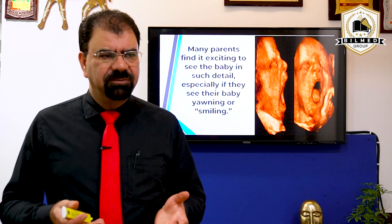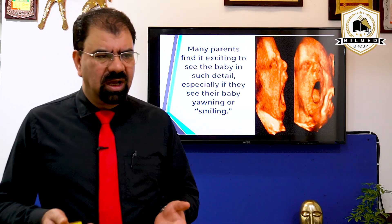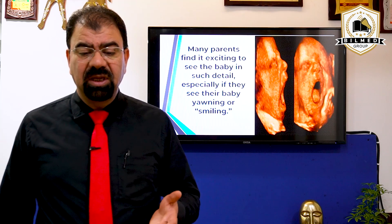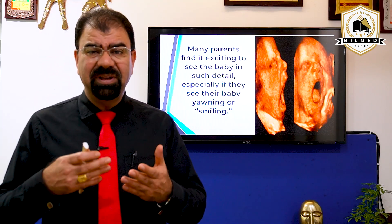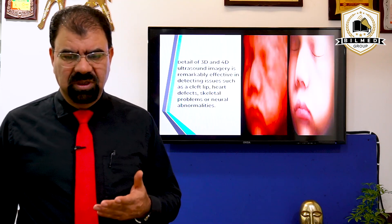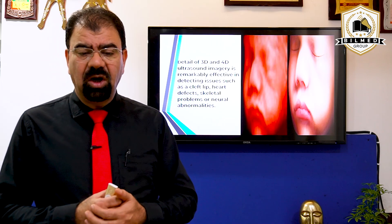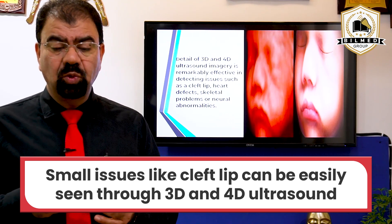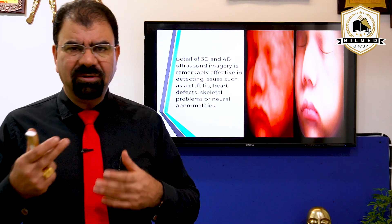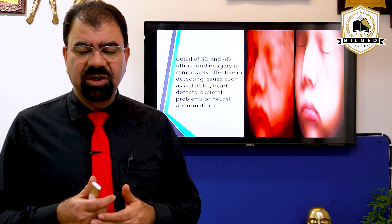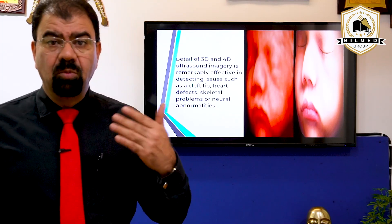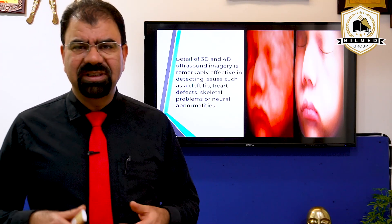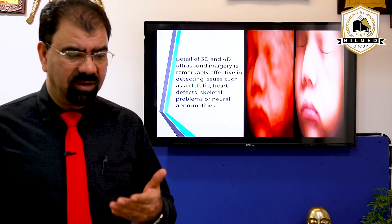If you are scanning a fetus, usually the parents will be happy when they see their baby yawning or smiling, which is not possible very clearly on a 2D ultrasound. The detail of 3D and 4D ultrasound is remarkably effective in detecting issues such as cleft lip, which is not very clear on 2D ultrasound, and neural abnormalities will be picked more clearly on 3D and 4D. But it does not mean that 2D is inferior — 2D shows us more of the internal structures when we are more concerned about function.